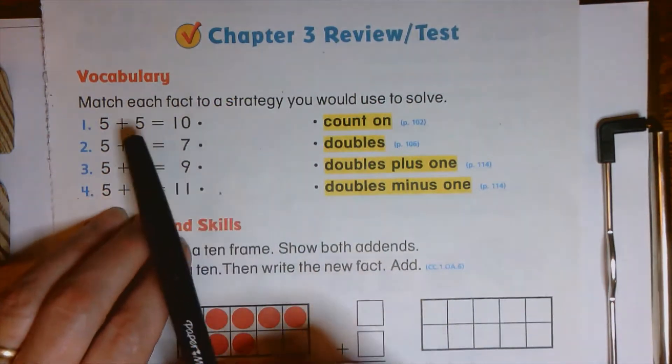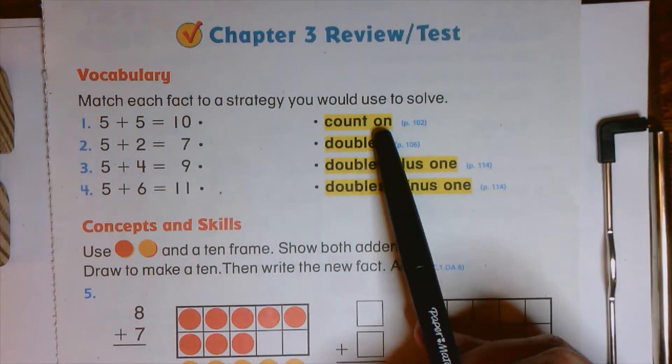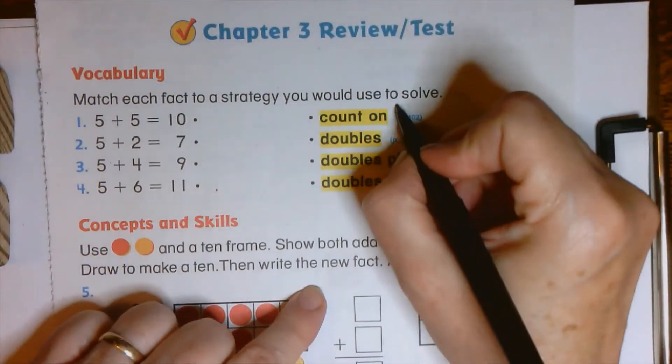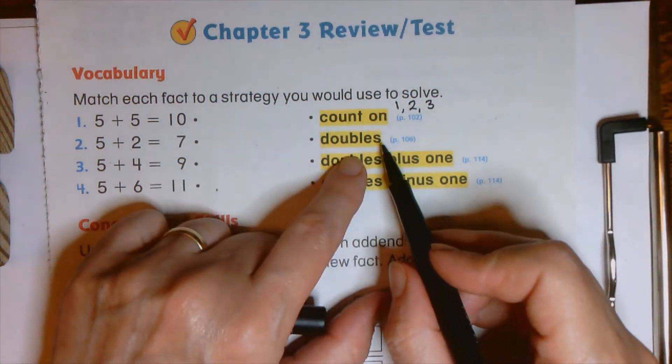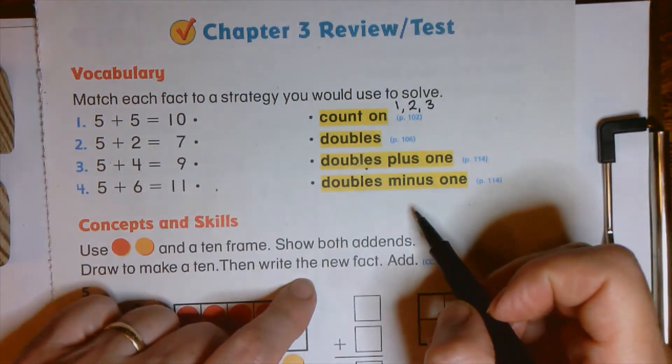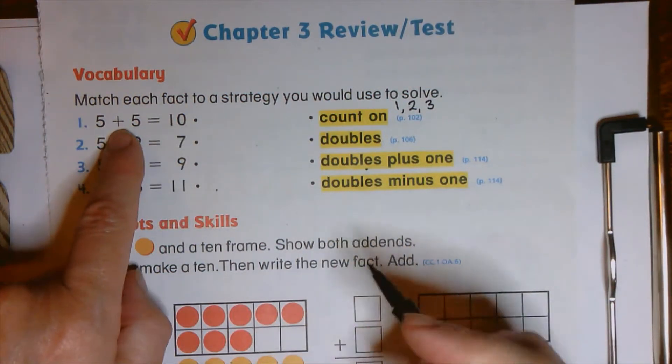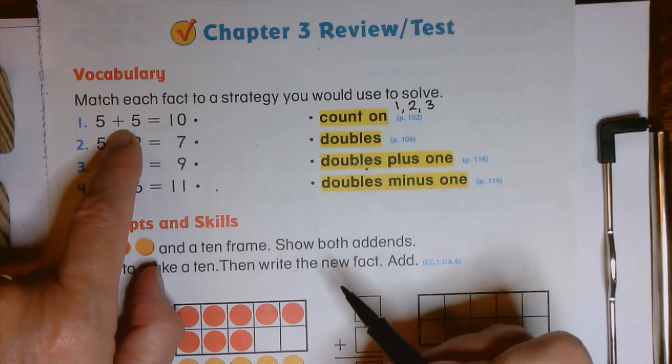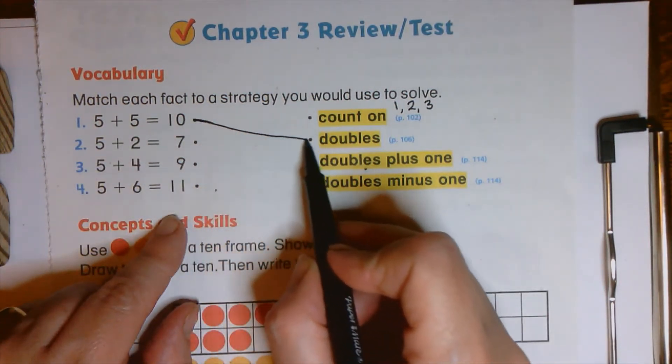Up here, we're going to start with do you remember when we talked about addition strategies? Counting on. Remember, we might do count on with one if we're adding one or two or three. Doubles facts. Do you remember we used to practice those all the time? Doubles plus one or doubles minus one. So let's take a look here. Here is our basic fact that we're starting with five plus five. And you guys know that one is a doubles, right?